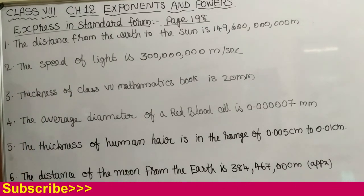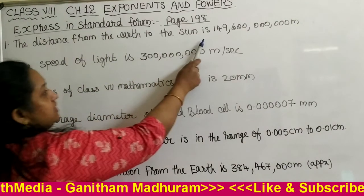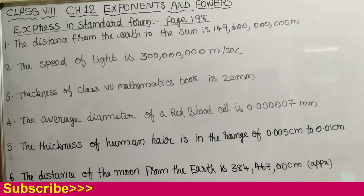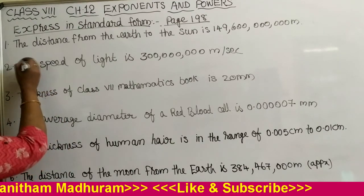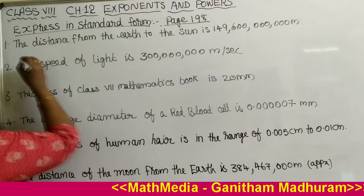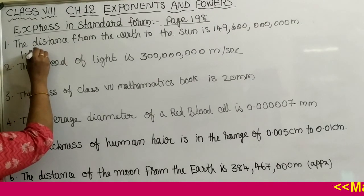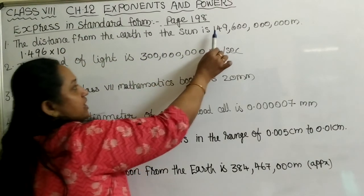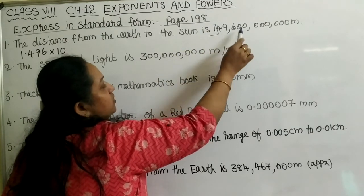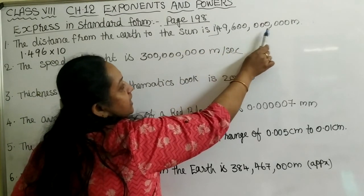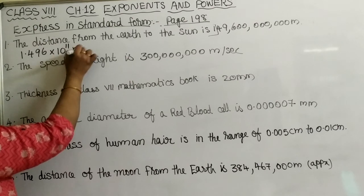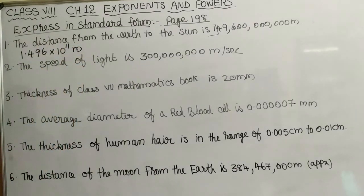Question 8: the distance from the Earth to the Sun is given in meters and we have to represent it in standard form. After the first digit we put the decimal point: 1.496. Counting the number of digits — 3 groups of digits giving 5 + 3 + 3 = 11 — so we write 10 raised to 11. The standard form is 1.496 into 10 raised to 11 meters.